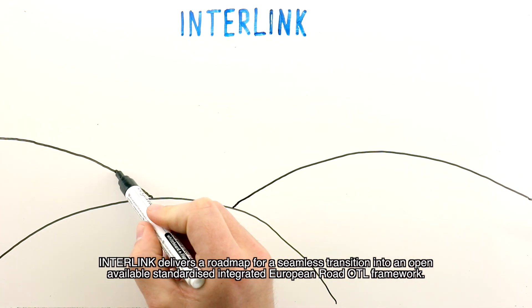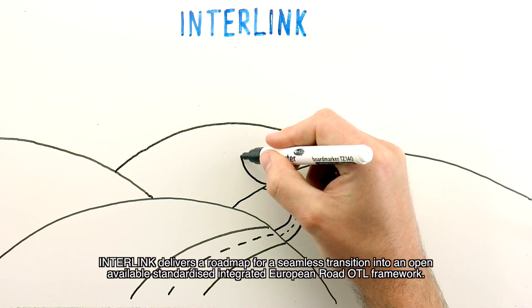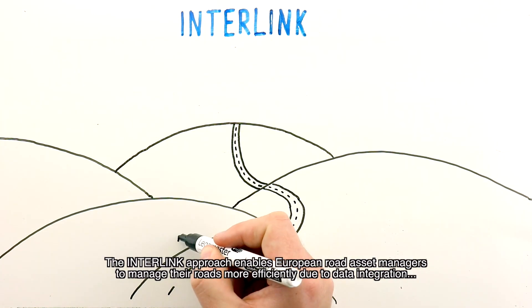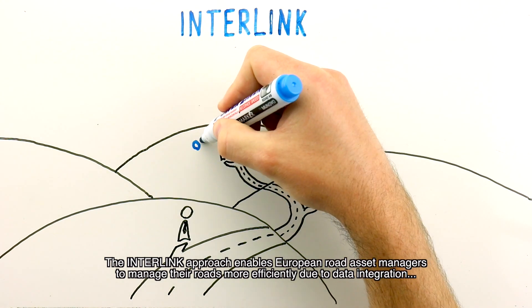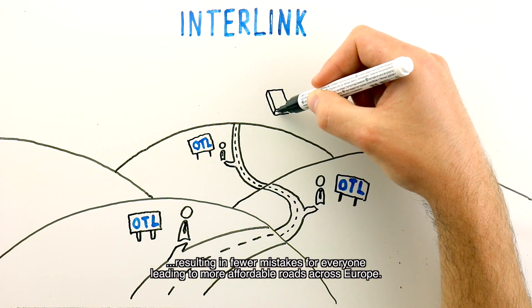Interlink delivers a roadmap for a seamless transition into an open, available, standardized, integrated European Road OTL framework. The Interlink approach enables European road asset managers to manage their roads more efficiently due to data integration, resulting in fewer mistakes for everyone.